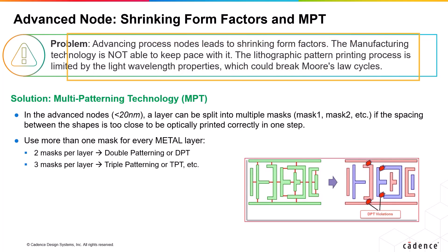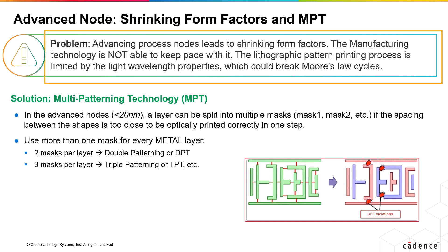Form factors are shrinking as the process nodes get more advanced, whereas the manufacturing technology is not quite able to keep pace with it. The lithographic pattern printing process is limited by the existing technologies, relying on light wavelength properties.